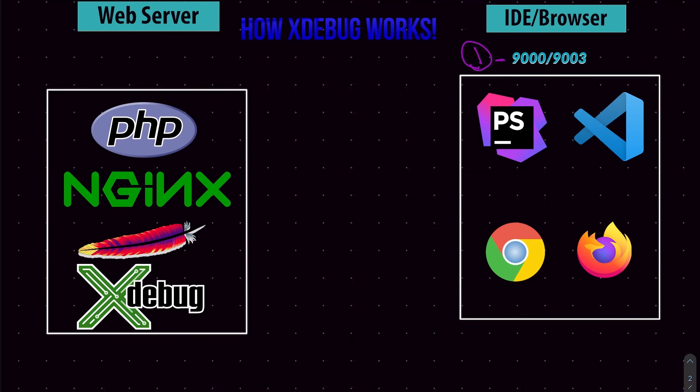The first thing that happens is your IDE starts to listen on port 9000 or 9003, depending on your configuration. You can change the port if 9000 or 9003 are already used by other services. Then you connect your IDE or browser with the web server. Since Xdebug is now installed on the web server as a PHP extension, when you send a request you include an Xdebug session ID. This session ID allows Xdebug to know that this request is a debugging request — not just a regular request or script execution.